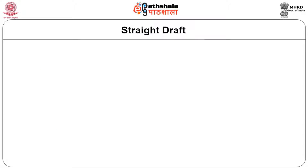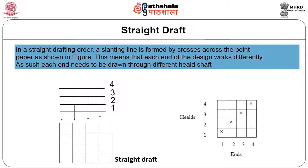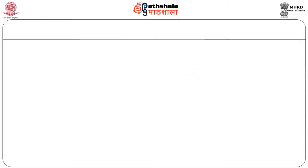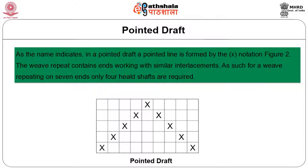In a straight draft, the slanting line is formed by crosses across the point paper. This means that each end of the design works differently, so each end needs to be drawn through different heel shafts. In a pointer draft, as the name indicates, the weave repeat contains ends working with similar interlacements. As such, for a weave repeating on seven ends, only four heel shafts are required.